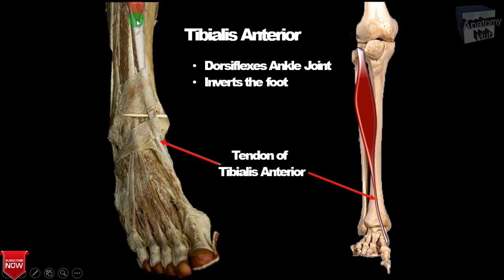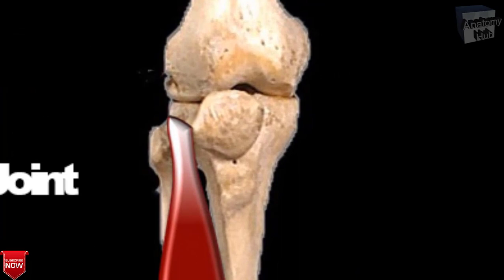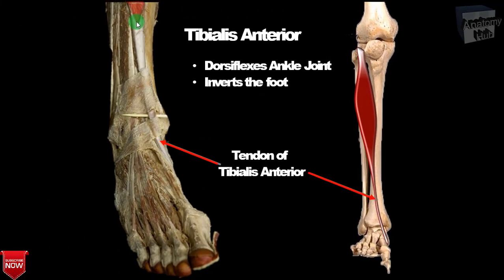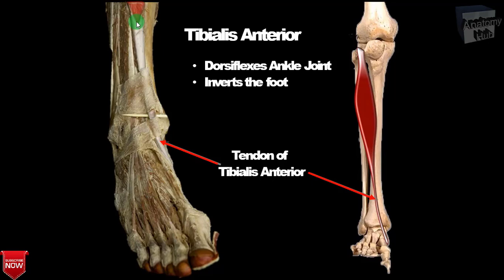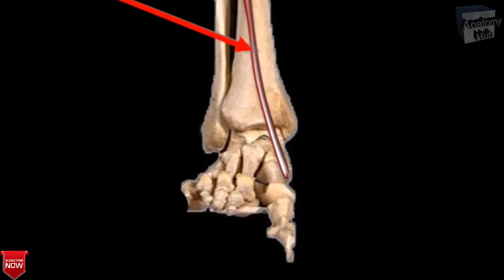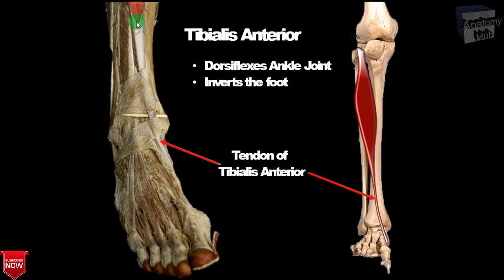The tibialis anterior originates from the lateral condyle of the tibia, the upper two-thirds of the lateral surface of the shaft of the tibia, and the interosseous membrane. Its insertion, in the form of a tendon, is on the medial surface of the medial cuneiform bone and the base of the first metatarsal bone. Its nerve supply is the deep peroneal nerve, and its actions are dorsiflexion and inversion of the foot, and it helps maintain the medial longitudinal arch.